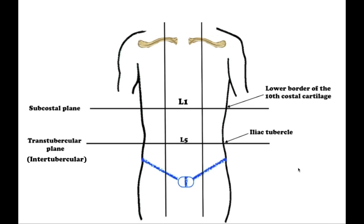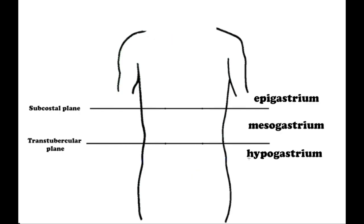The nine regions are formed by two horizontal and two vertical planes. The horizontal planes are: the superior subcostal plane, which passes right under the costal margins of the tenth ribs at approximately the level of the first lumbar vertebra, and the inferior intertubercular plane, which connects the tubercles of the iliac crest.